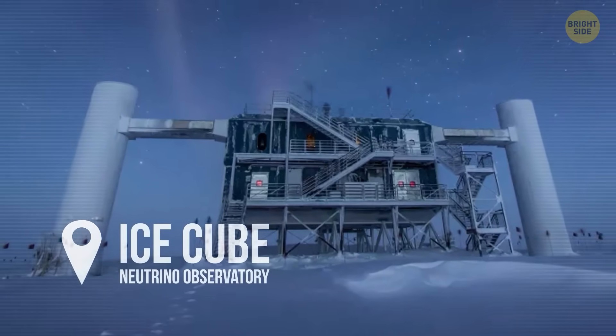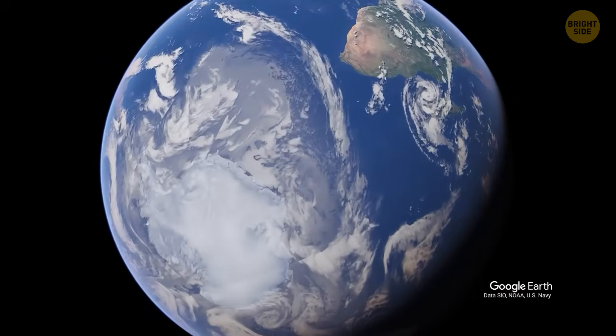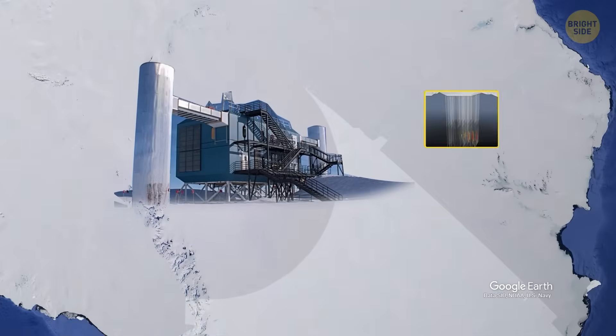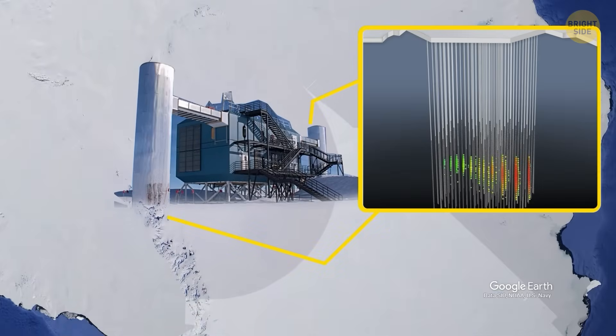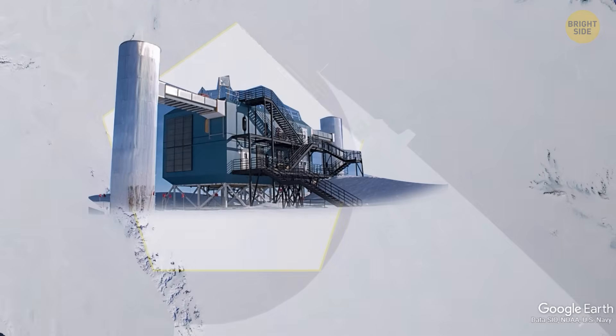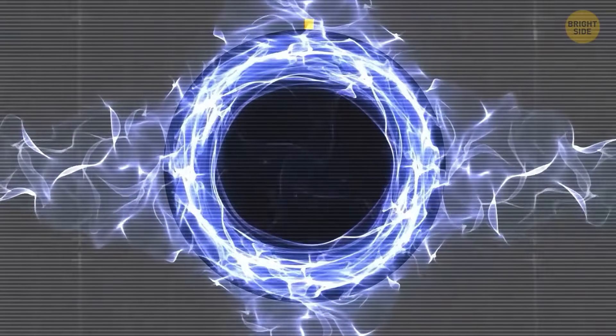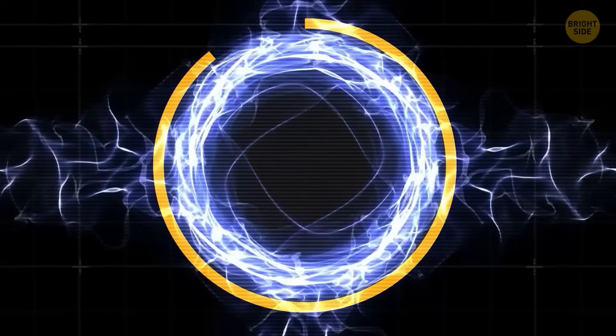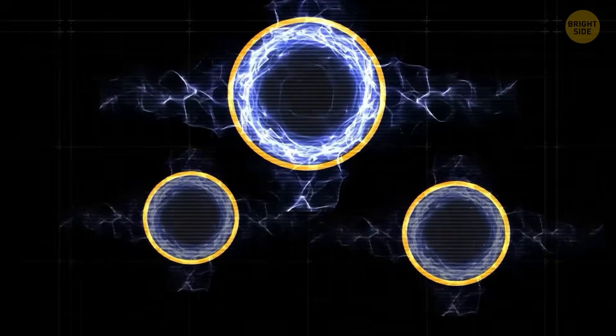The main detector consists of over 5,000 digital optical modules, sensitive light sensors, which are attached to 86 vertical strings frozen into the ice. These strings are arranged in a hexagonal grid, with each string carrying 60 digital optical modules. Together, they form an enormous three-dimensional array.